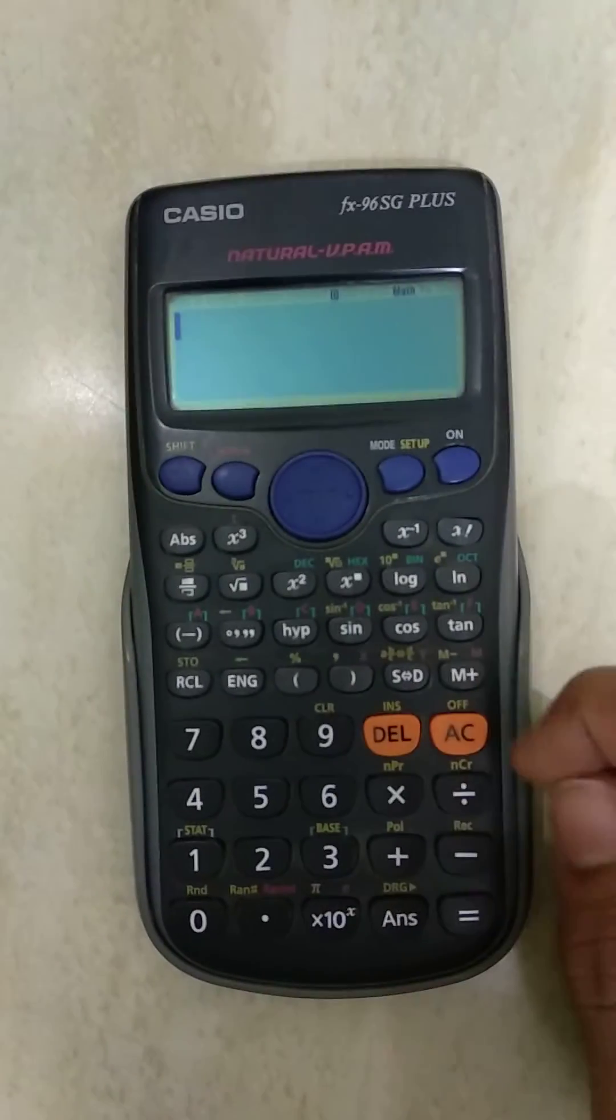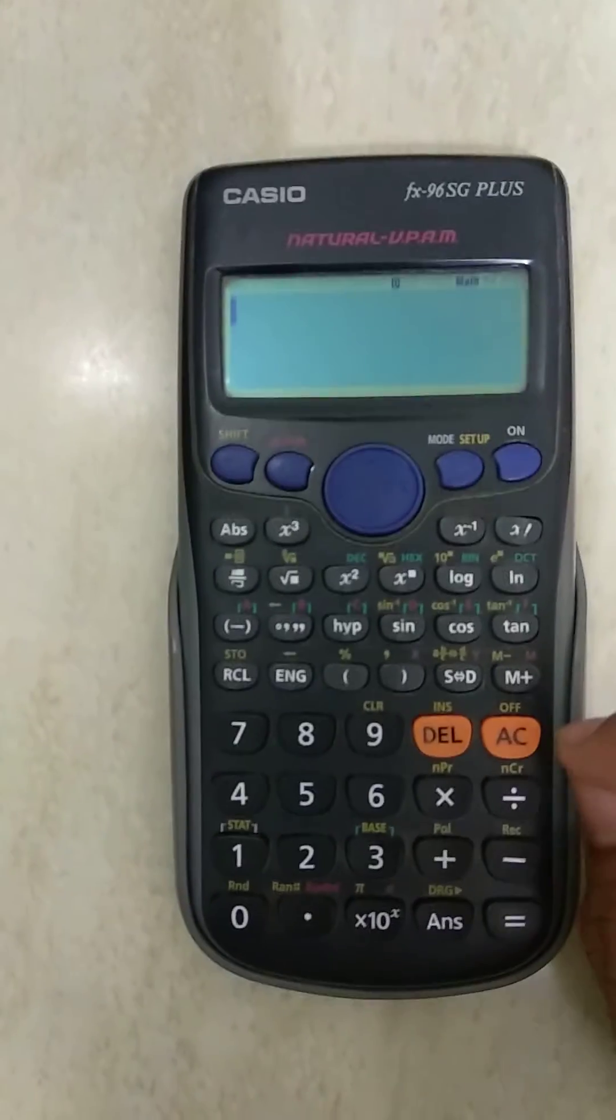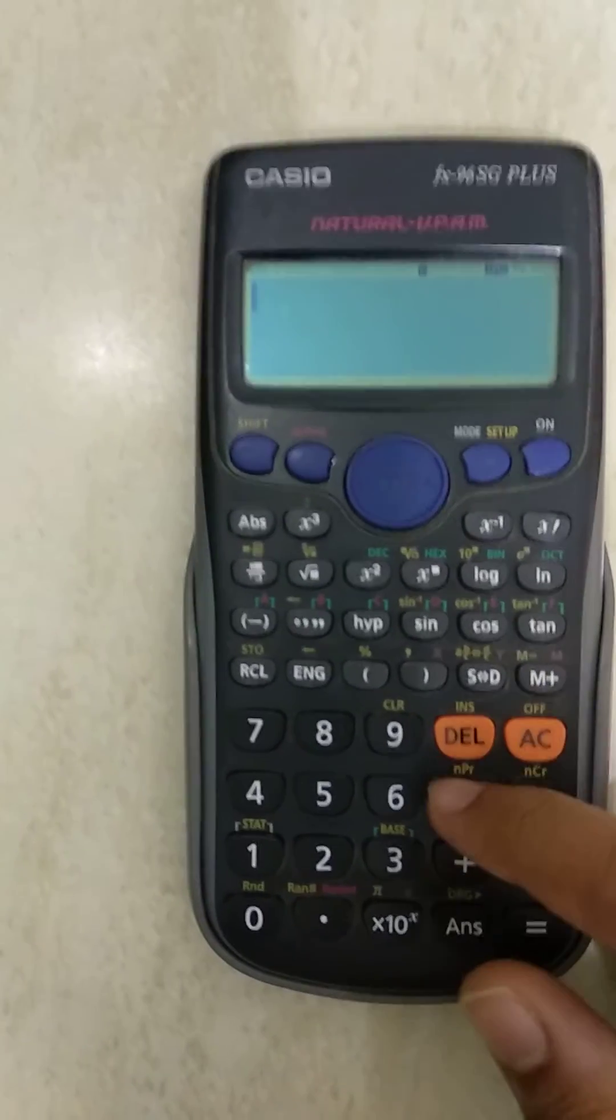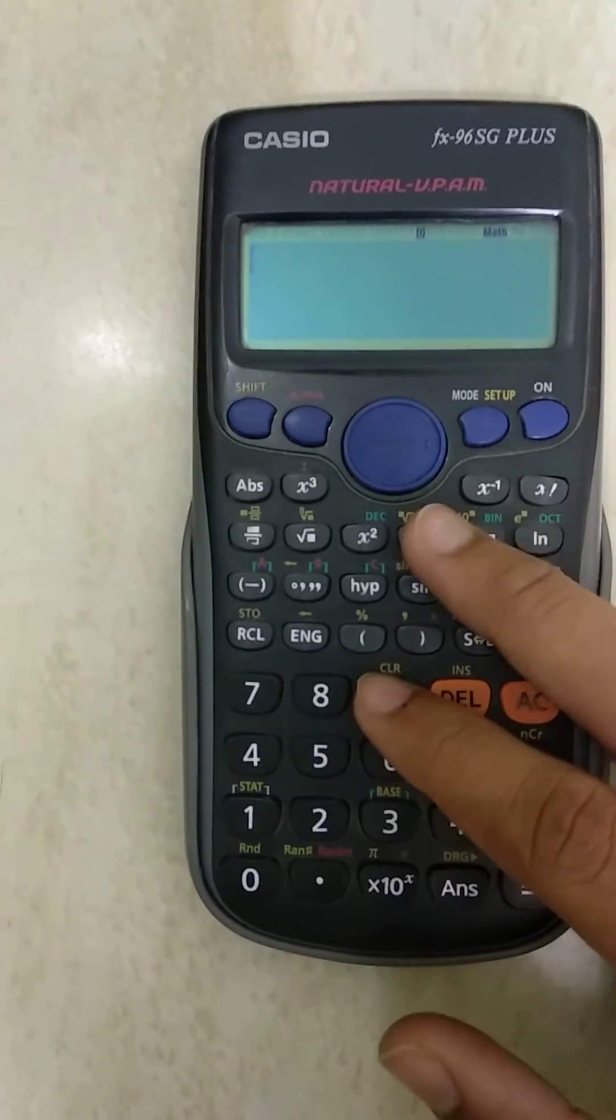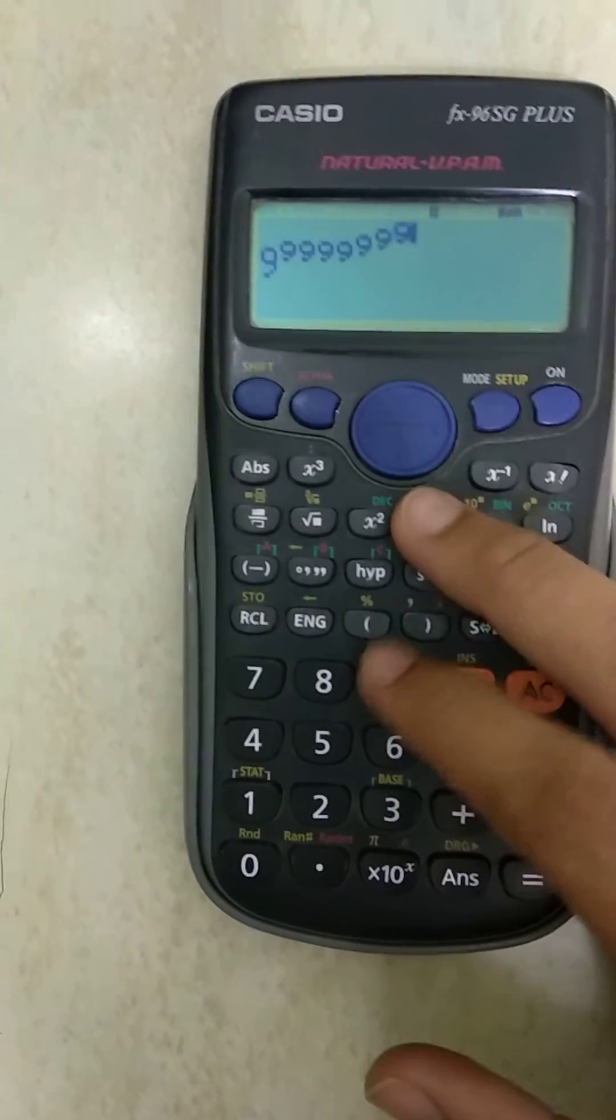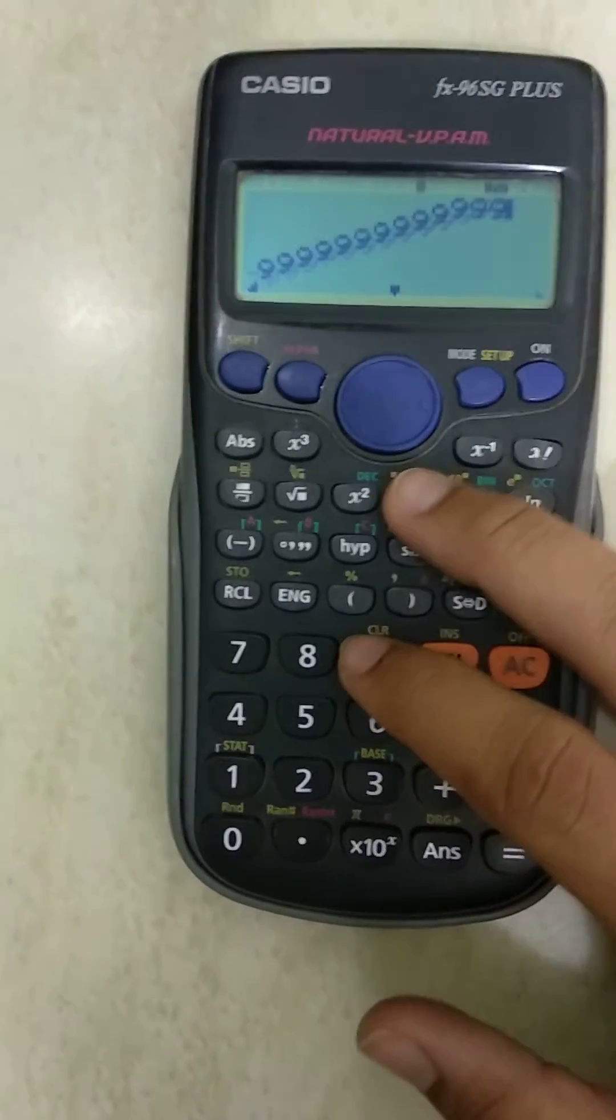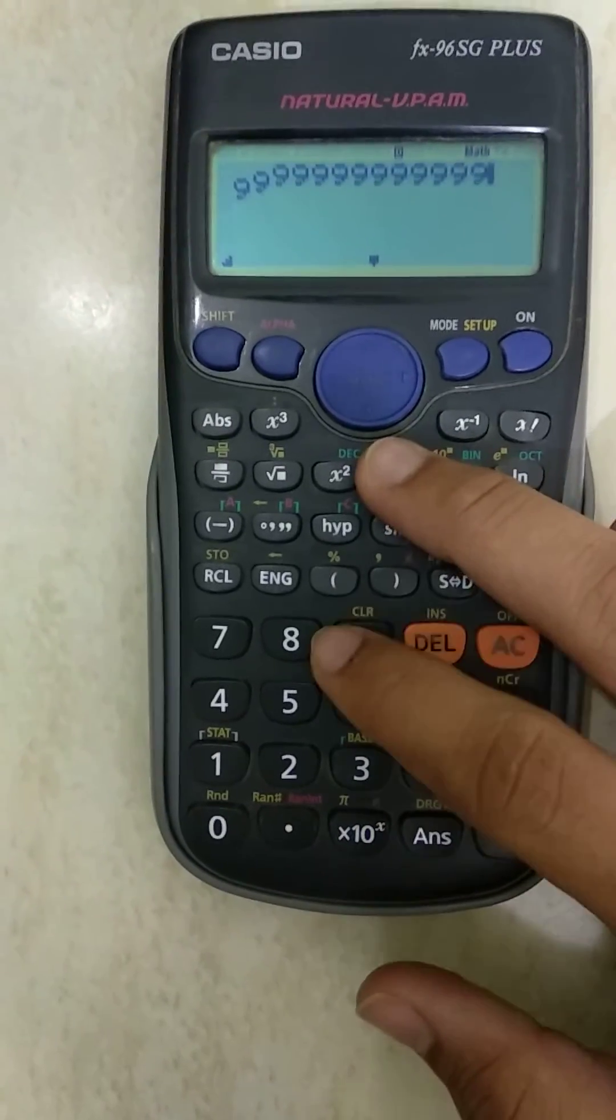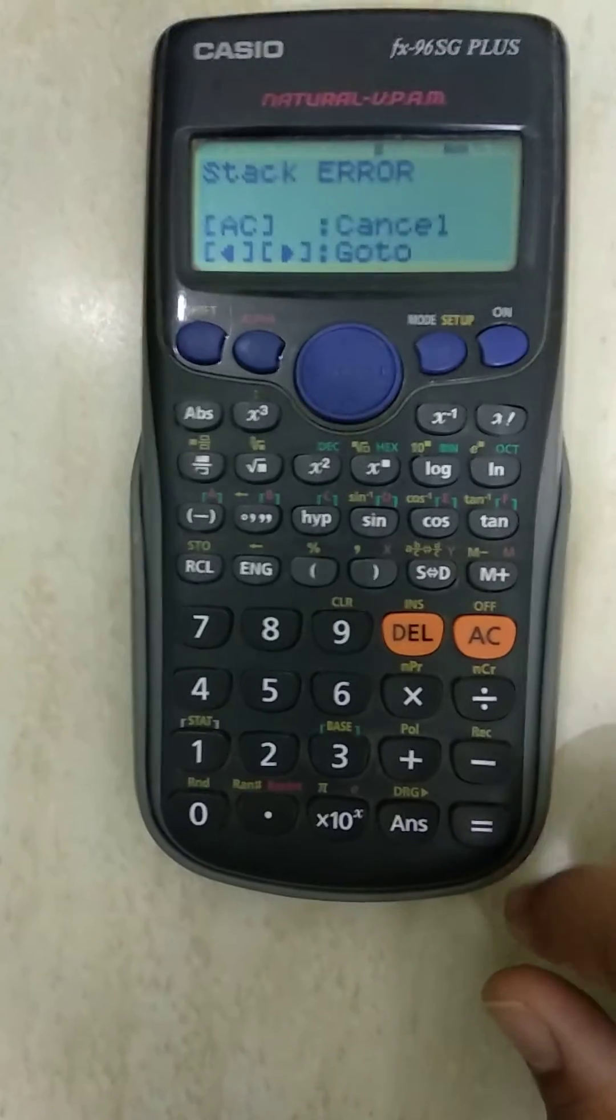The second error we're going to perform is the stack error. This error usually occurs when you stack something and it goes beyond the numerical capacity, and we have to simplify it. It tells us to simplify the equation. For example, we go like this. Just keep on stacking. If we press equals, it will give us the stack error.